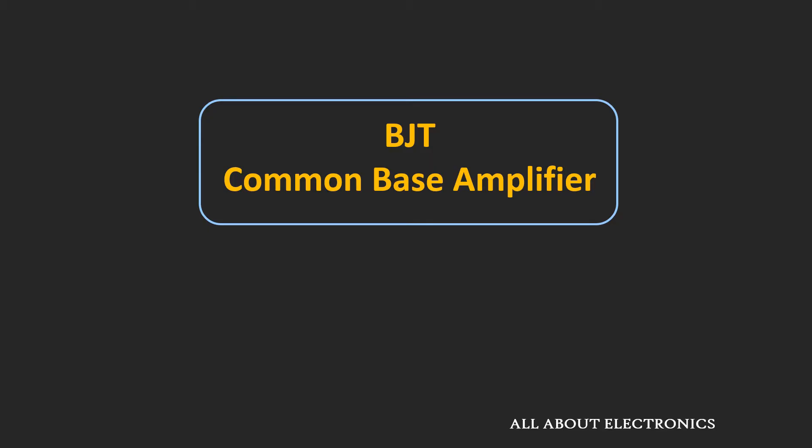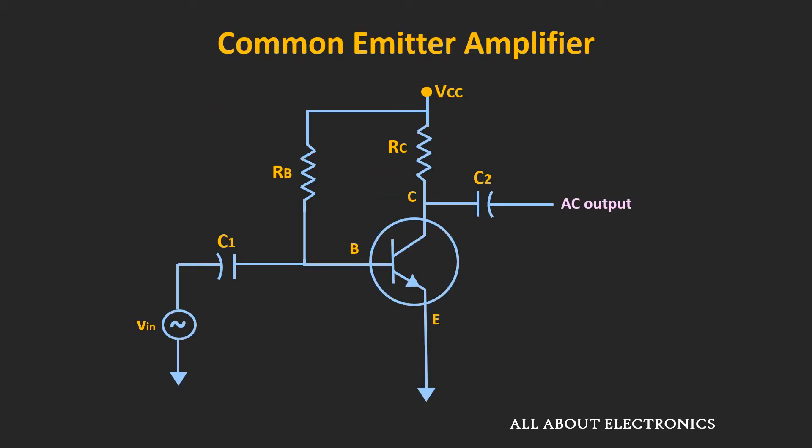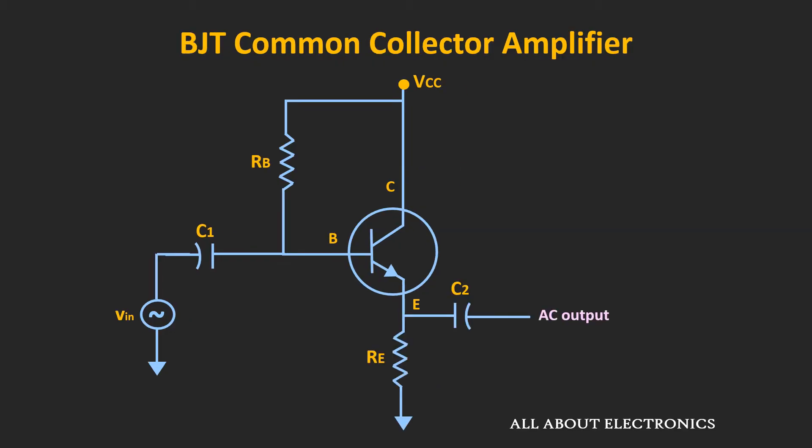If you have followed the last couple of videos on the BJT, we have discussed about the Common Emitter and the Common Collector Amplifier. Similarly, now let's talk about the Common Base Amplifier and let's find out the different amplifier characteristics like the voltage gain, the input and the output impedance.